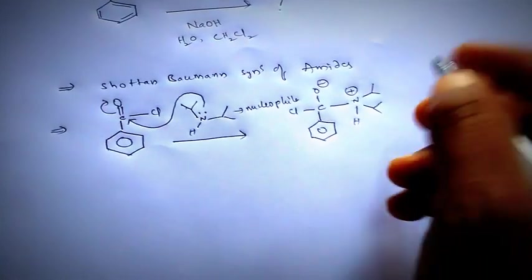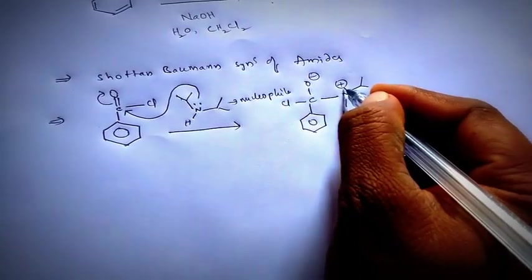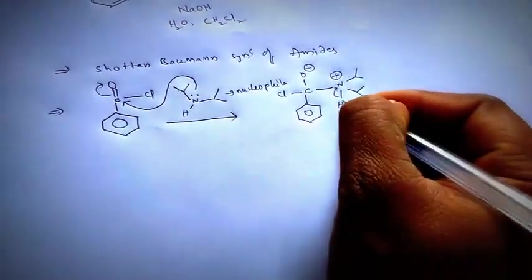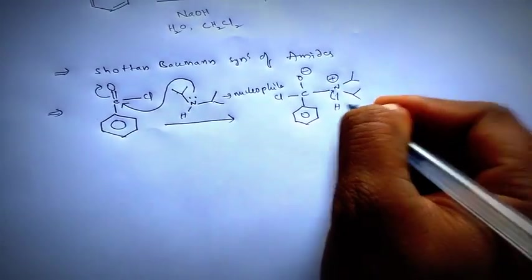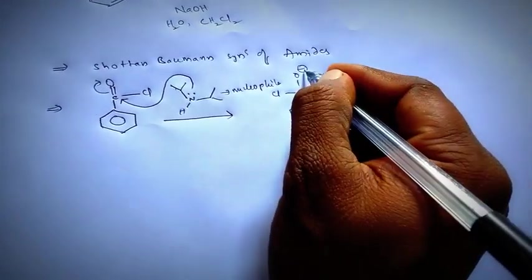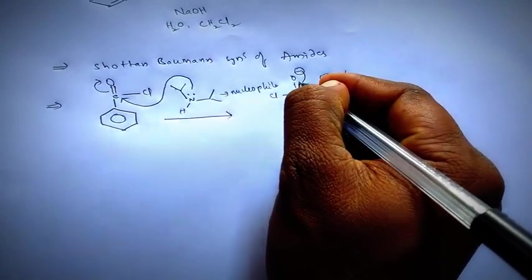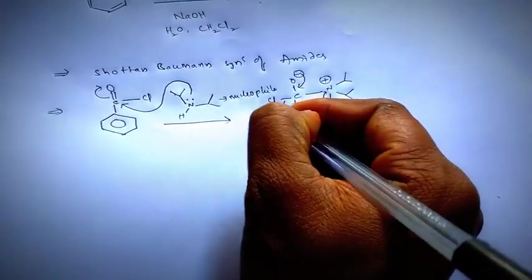We can get this one and further to compensate positive charge on nitrogen, it attracts electrons from this one and loses H+. And this negative charge comes on it and chloride leaves.